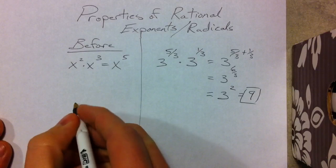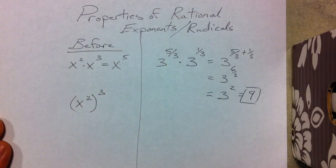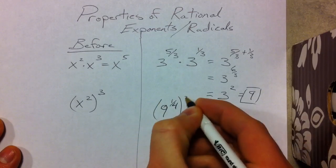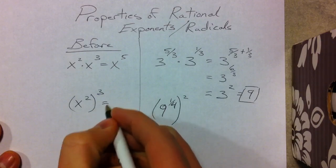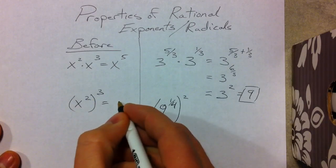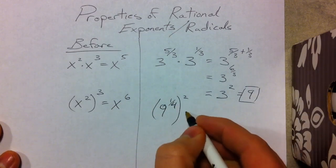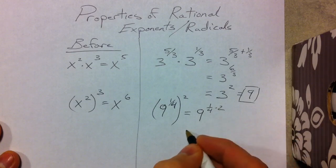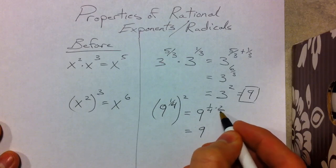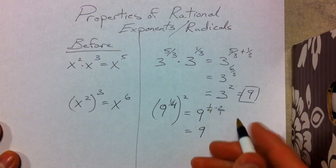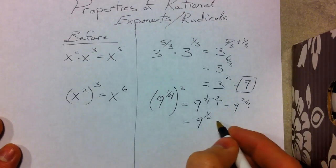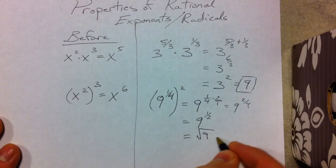Next property: we had x squared cubed. If we have 9 to the 1 fourth power raised to the second power, we multiply the exponents — just like x squared cubed gave x to the 6th. So 9 stays the same, and we multiply 1 fourth times 2, which gives 2 over 4, or 1 half. 9 to the 1 half is the square root of 9, which is 3.